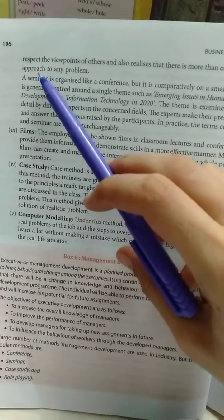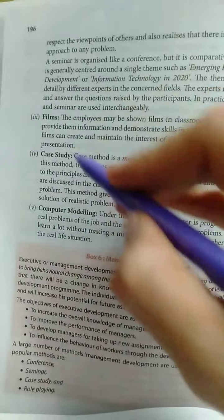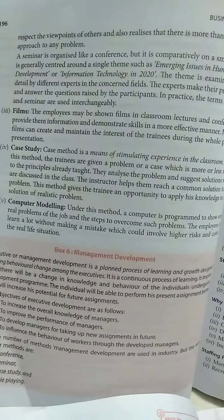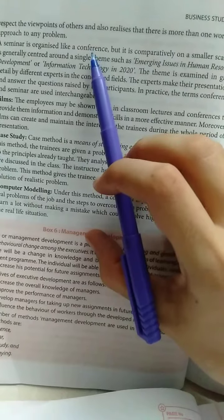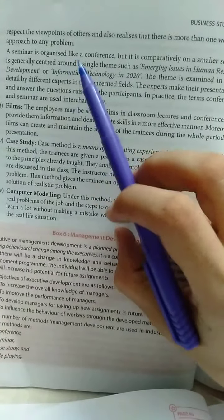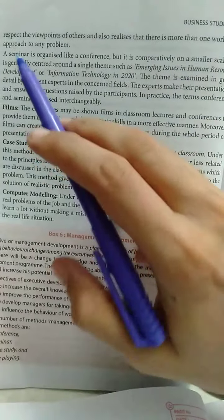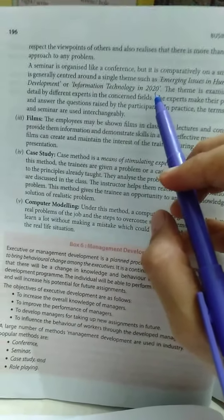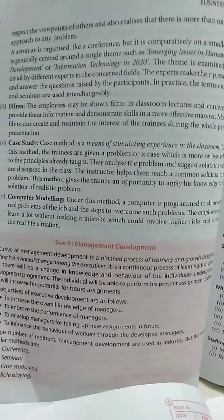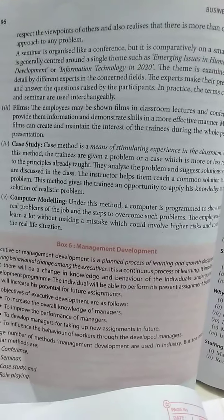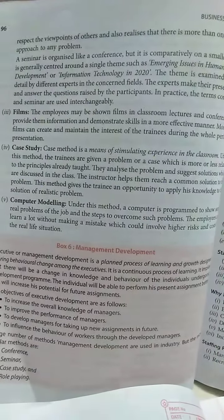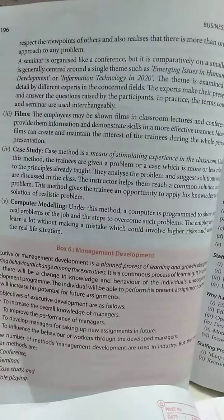He learns to respect the viewpoint of others and also realizes that there is more than one workable approach to any problem. Conference mein kai log ek saath group meeting karte hain, ek leader hota hai, aur ismein aap apne views rakh sakte ho, points rakh sakte ho. Seminar kya hota hai — it is organized like a conference, yeh bhi group meeting hai, but thodi small scale par hoti hai. It is generally centered around a single theme, like engineering issues in human resource development or information technology. Theme is examined in great detail by different experts — kai saare experts aate hain aur woh theme par discussion karte hain, experts apni presentation banate hain, question ka answer karte hain participants ka. So the terms conference and seminar are used interchangeably — bade scale par conference, chote scale par seminar.